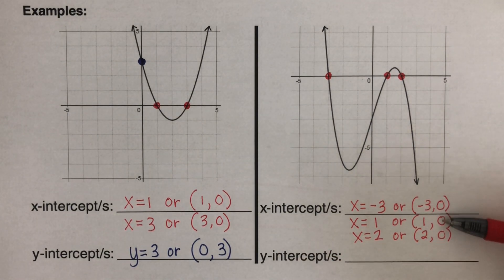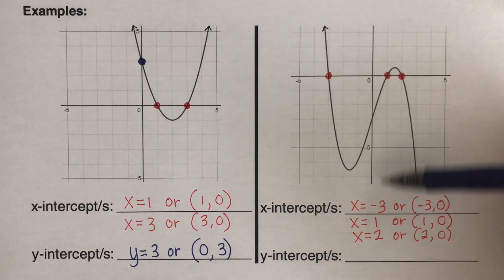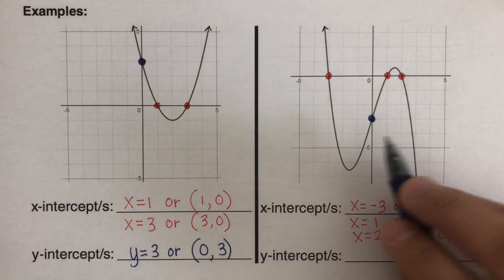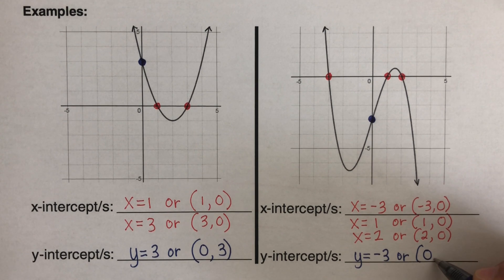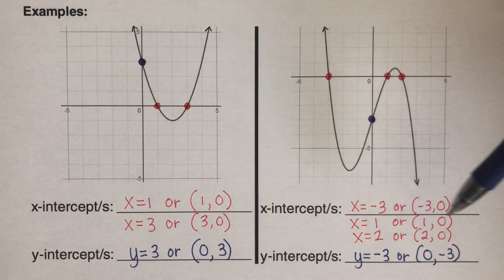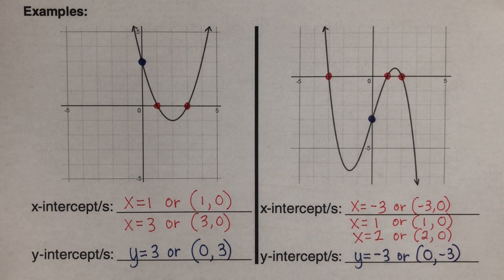Now for the y-intercept, we find where the graph crosses the y-axis, and that is y equals negative 3, or in coordinate form (0, -3). In this example we had three x-intercepts — there can be none, one, two, four, or more. For the y-intercept, most examples had only one, but there can also be none or more than one.